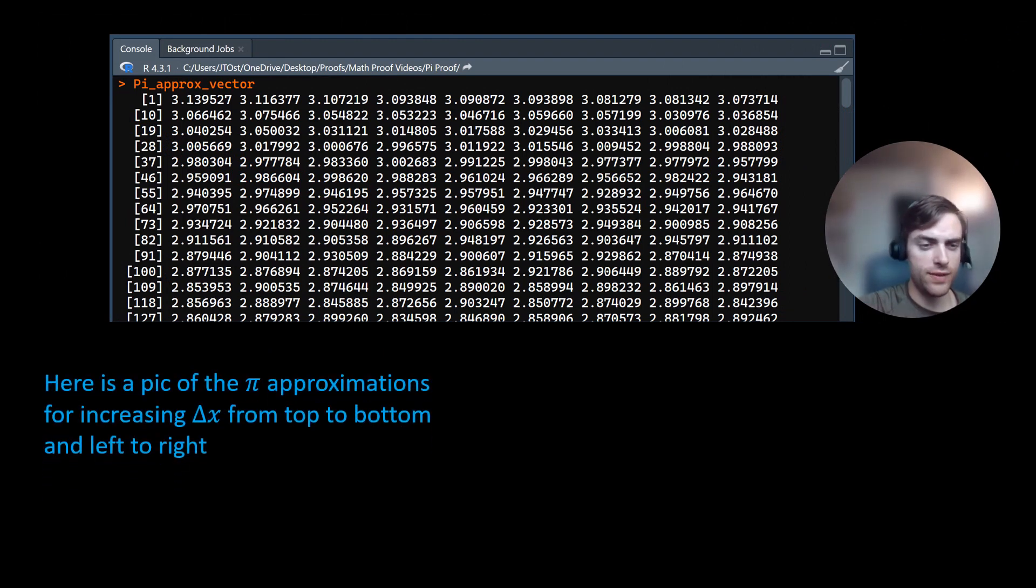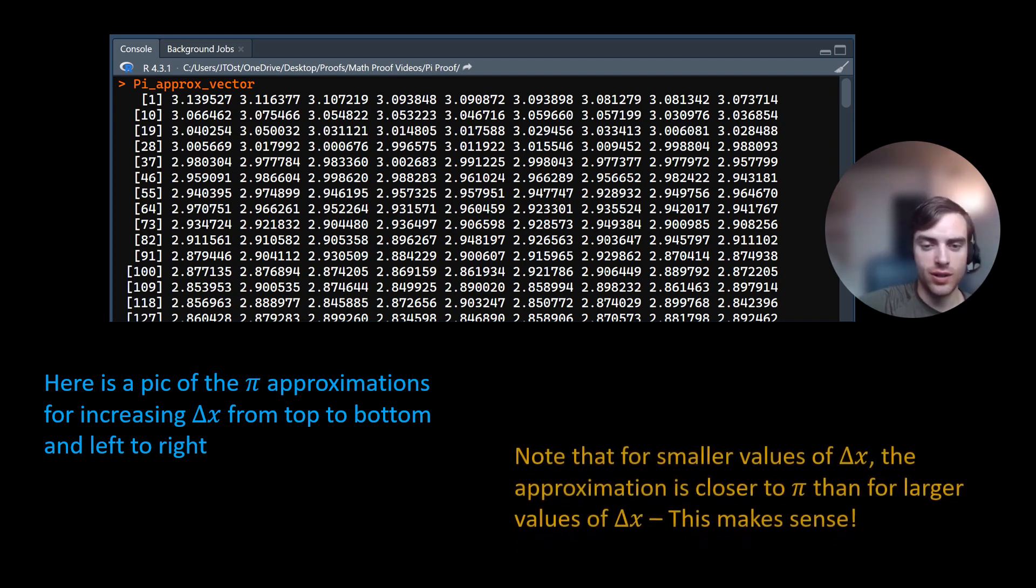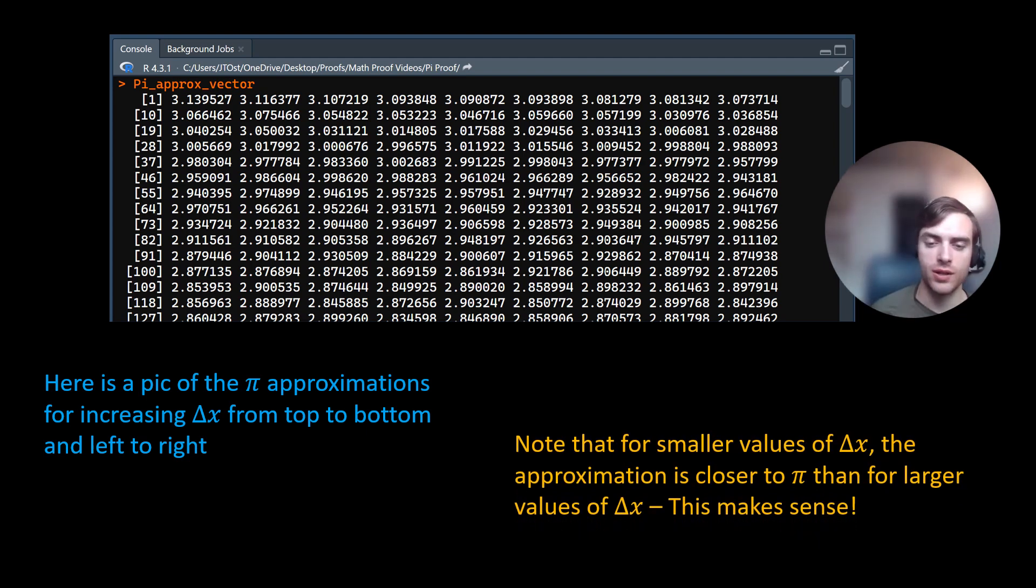And so here we have a picture of the pi approximations for increasing delta x from top to bottom and left to right. So note that for smaller values of delta x, the approximation is closer to pi than for larger values of delta x. And this makes sense.